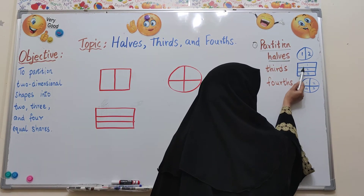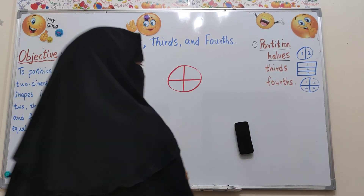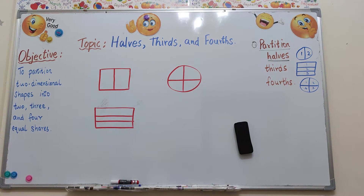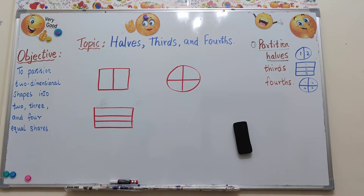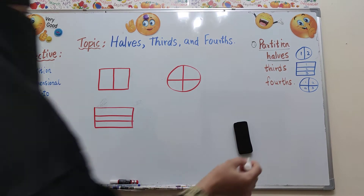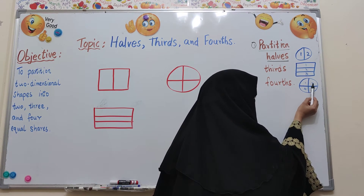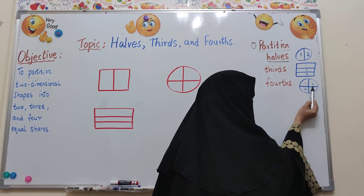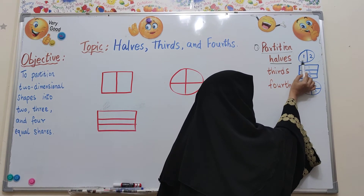Each part is a third of the whole. When I say fourths, that means four equal parts or four fourths — each part is a fourth of the whole. If you see the diagram here, there are four equal parts, here three equal parts, and here two equal parts.